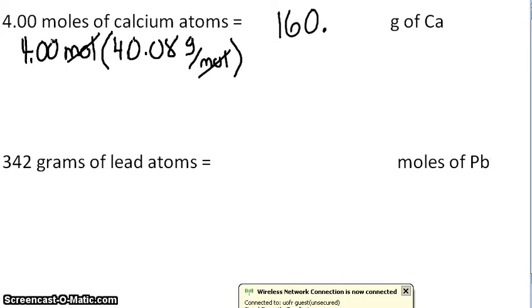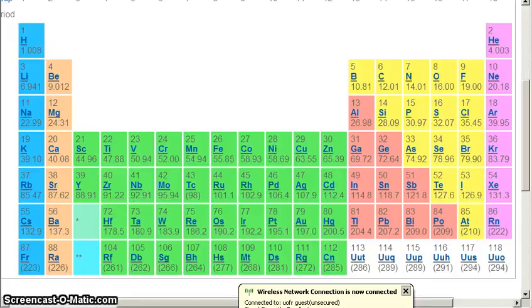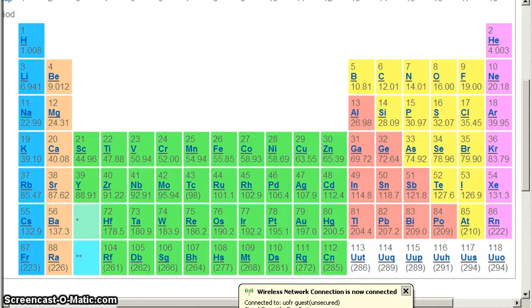of calcium. Now to go the opposite way, we will go and find the molar mass of lead. You go to your periodic table and you find Pb, and the molar mass is 207.2.